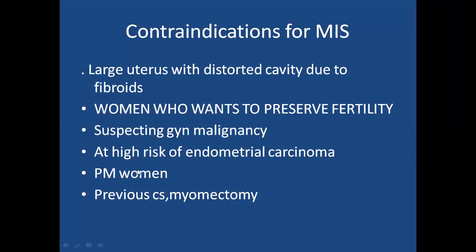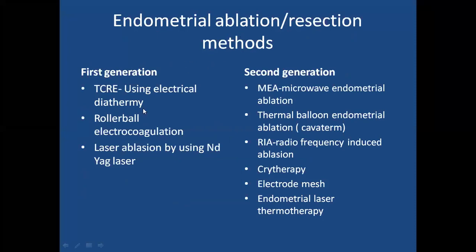In perimenopausal women, hysterectomy is the surgery of choice rather than conservation of uterus. Examples of first generation techniques: TCRE — transcervical resection of the endometrium using electrical loop diathermy, rollerball electrocoagulation, and laser ablation using Nd:YAG laser. Second generation examples: microwave endometrial ablation (MEA), thermal balloon endometrial ablation (Cavaterm), radiofrequency-induced ablation (NovaSure), cryotherapy, electrode mesh, and endometrial laser therapy.